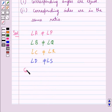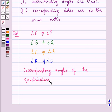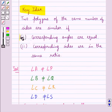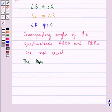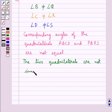Thus we say that the corresponding angles of the quadrilaterals ABCD and PQRS are not equal. Hence the condition 1 is not satisfied. So we say that the two quadrilaterals are not similar. Hence the final answer is no.